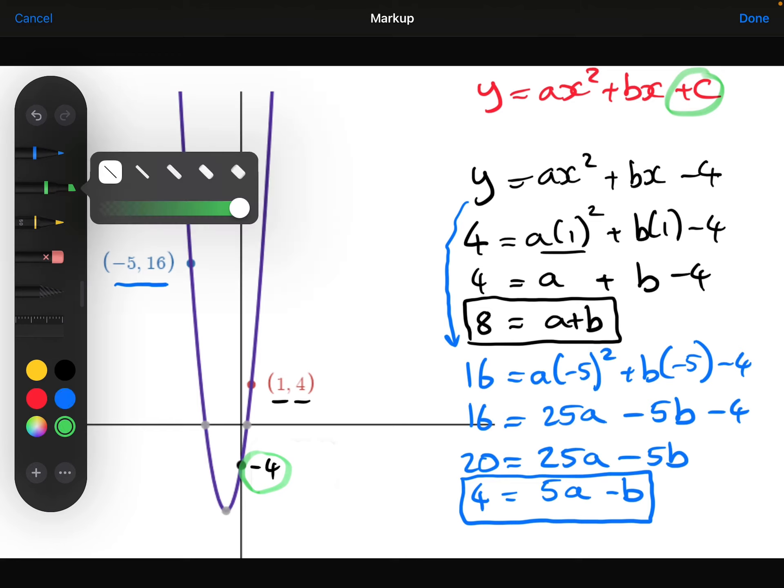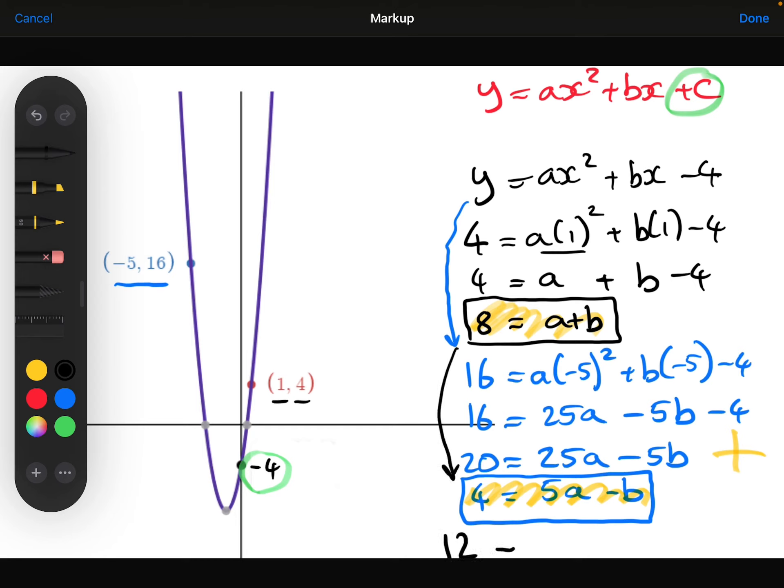I can now solve these two equations simultaneously. If I add these two equations together, then the b's would cancel out. So that's what I'm going to do. So the 8 plus the 4 is 12. The a plus the 5a is 6a. And the minus b and the b are going to cancel out. So I just get 6a is equal to 12. So therefore, the a has to be 2.